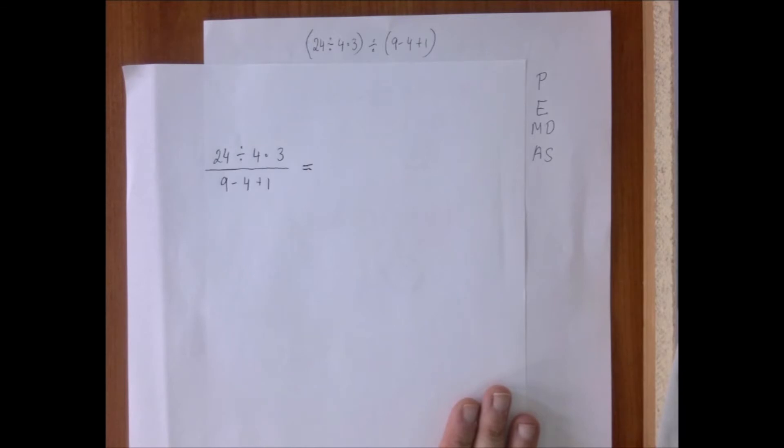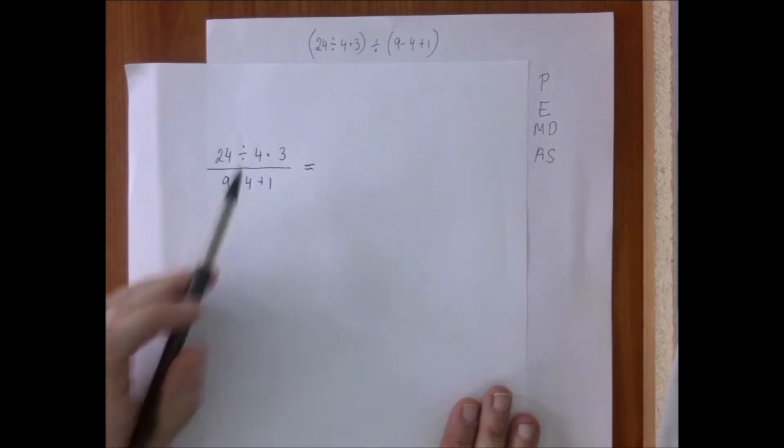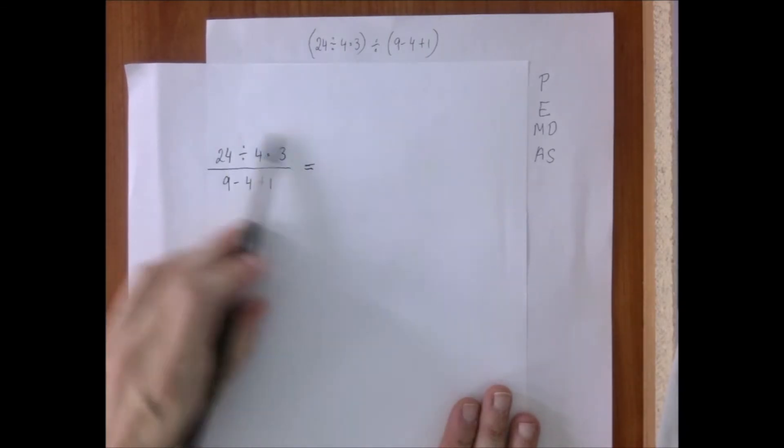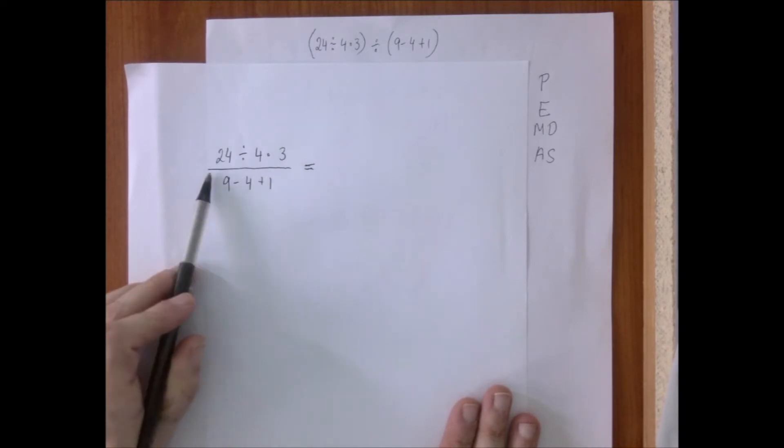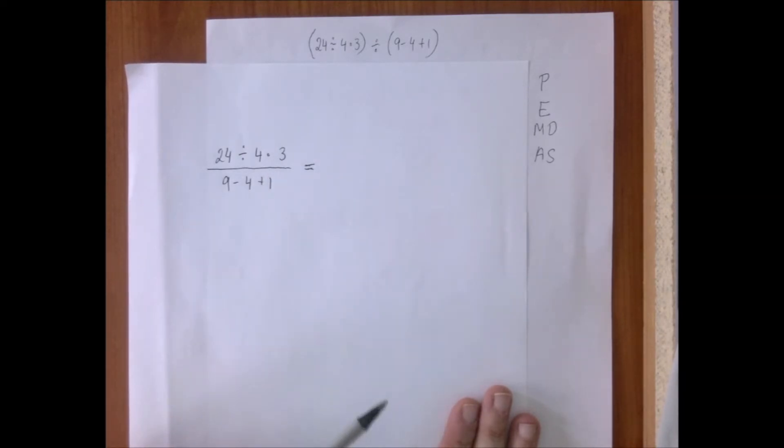So it would be tempting, but incorrect, to say, okay, 4 times 3 is 12, we're dividing 24 by 12. That is not what happens.